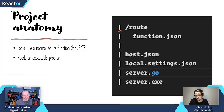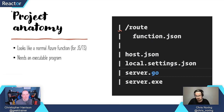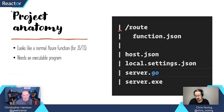You also have a host.json file, which is very important because it talks to your serverless host. And you have a local.settings.json, which is a great file to use for local settings — for example, to connect to various data sources. You usually push those to the cloud as app settings. For example, if you have a connection string to a database, local.settings.json is a great place to put it.